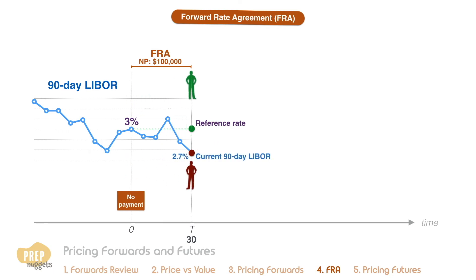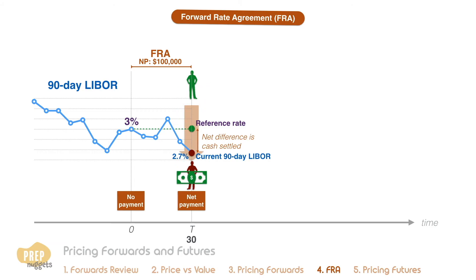FRAs are usually cash settled, with a payment based on the net difference between the spot interest rate and the reference rate in the contract. In this case, since the long has to pay the short a higher rate, the net difference in rate on the notional principal is paid from the long to the short. The calculation of the actual amount to pay is left to the Level 2 curriculum.